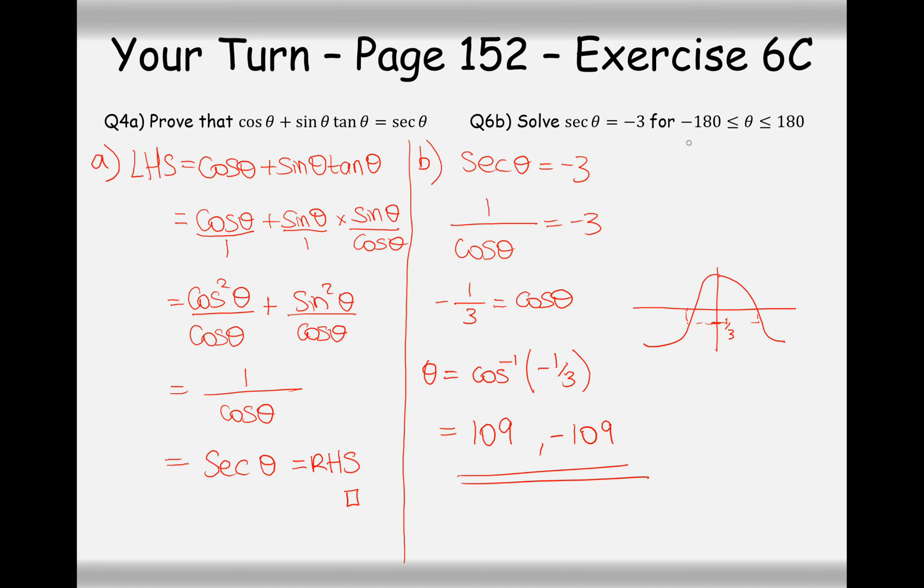And it's negative 109 as well because the cos graph is symmetric. And these are the two answers in between minus 180 and 180. When answering these questions, always check the range that they're looking for your answers to be in between. And that's how you know how far you need to draw your graph.